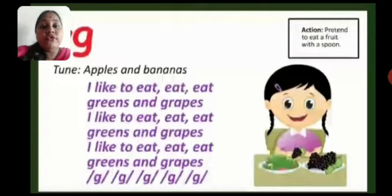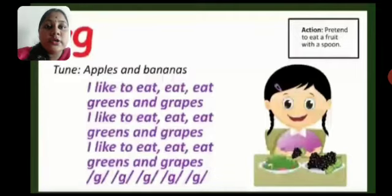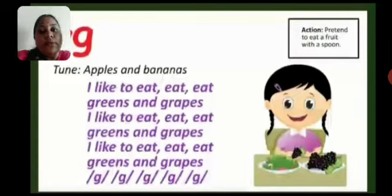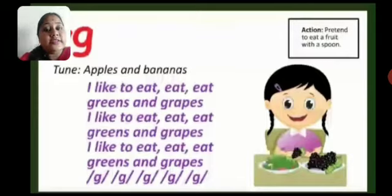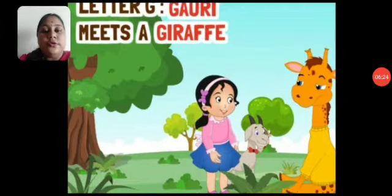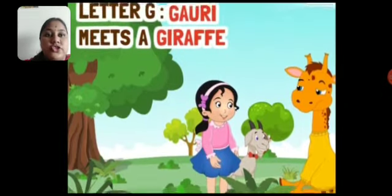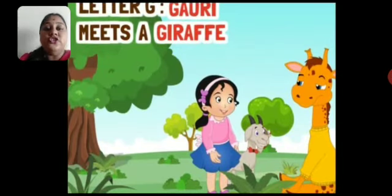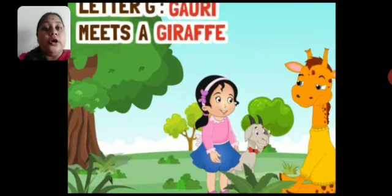Okay children, now let's get ready for listening to a small alphabet story. Kaun se alphabet ka story mein bataoongi aapko? Alphabet G. Main kya karungi — alphabet G se start hone wale words se ek small short story aapke liye ready karungi. So let's get ready, sit straight and listen to the story. The name of the story is Letter G: Gowri Meets a Giraffe. G for Gowri, G for giraffe — Gowri meets a giraffe.